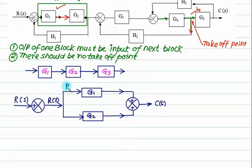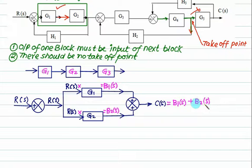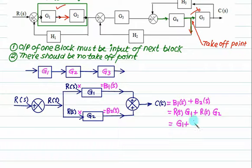This is R(S), and the signal will not divide. So this value equals R(S). This value multiplied by G1 gives a new value — let's call it B1(S). This value multiplied by G2 gives B2(S). And now there is an addition, so C(S) equals B1(S) plus B2(S). But B1(S) equals R(S) multiplied by G1, and B2(S) equals R(S) multiplied by G2. So C(S) equals G1 plus G2, multiplied by R(S).